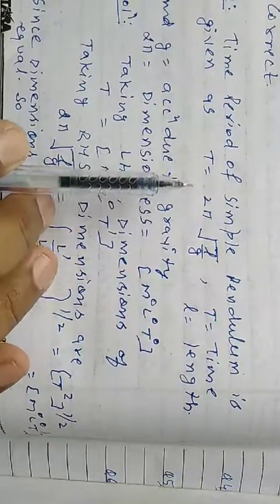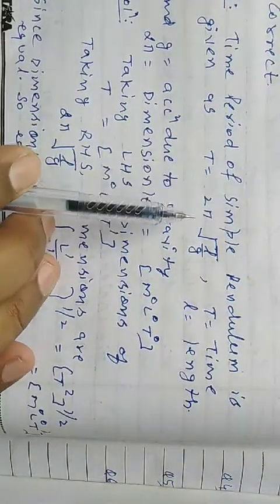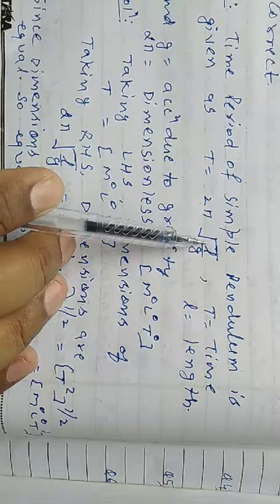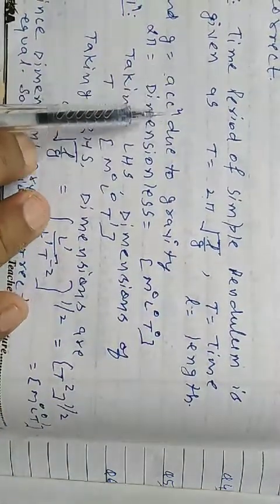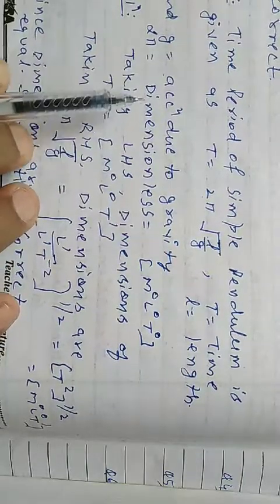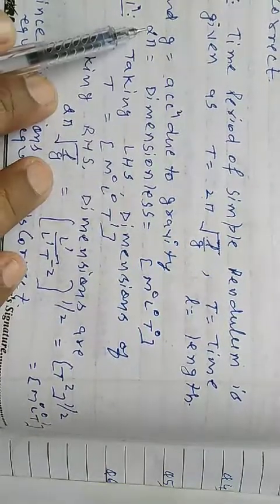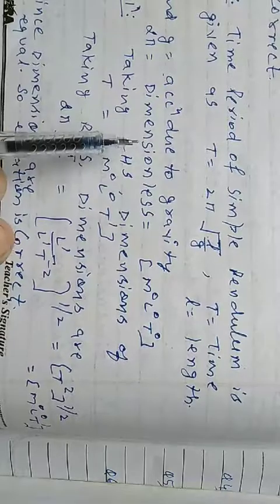In the next example, time period of a simple pendulum is given as T equal to 2π under root l upon g. T is time period, l is length, g is acceleration due to gravity. 2π is dimensionless because 2 is constant, π is constant. This is dimensionless.